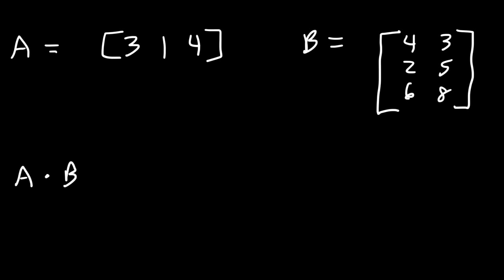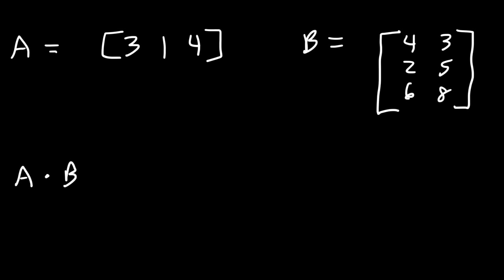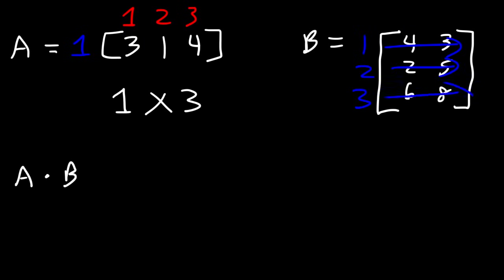First let's talk about the size of the matrix. You need to be familiar with rows and columns. Rows are horizontal and columns are vertical. Matrix A has one row but it has three columns, so matrix A is a one by three matrix. Matrix B has three rows and two columns, so it's a three by two matrix.